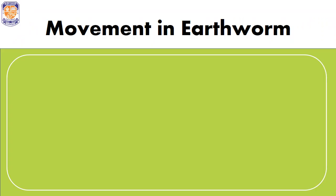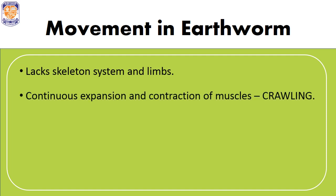Movement in earthworm: Earthworms do not have hands and legs for movement, so they lack a skeletal system as well as limbs. Continuous expansion and contraction of muscles is how movement of the earthworm is carried out. The kind of movement shown by them is known as crawling.